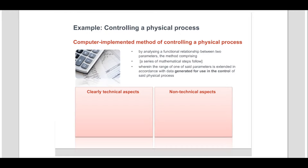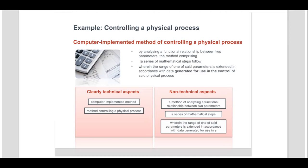The clearly technical aspects of the claim lie in the following two parts. Firstly, the method is implemented in a computer, the adaptation of a computer for carrying out a method being a clearly technical function. Secondly, the method is used in the control of a physical process, the application of a method to control a physical entity having technical character. The mathematical steps in the middle of the claim, when considered in isolation, are non-technical aspects since they belong to the field of mathematical methods excluded under Article 52.2a.